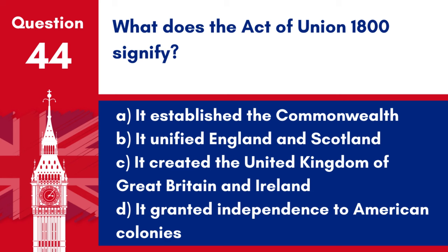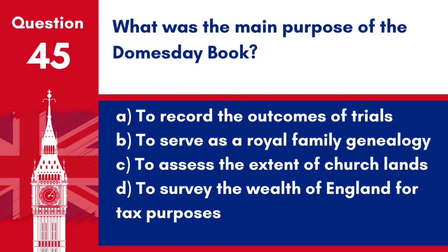Question 44. What does the Act of Union 1800 signify? a. It established the Commonwealth. b. It unified England and Scotland. c. It created the United Kingdom of Great Britain and Ireland. d. It granted independence to American colonies. Answer: c. The Act of Union 1800 unified the Kingdoms of Great Britain and Ireland into a single state.